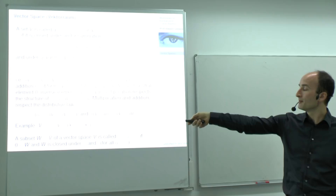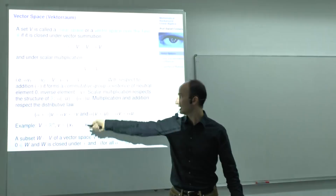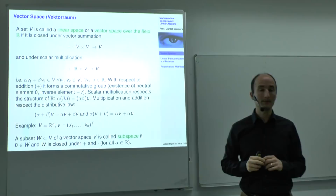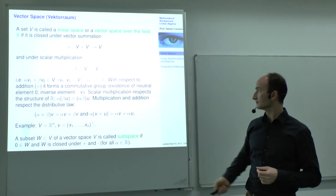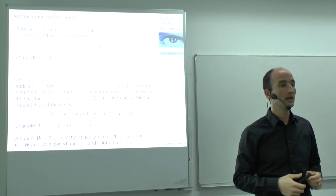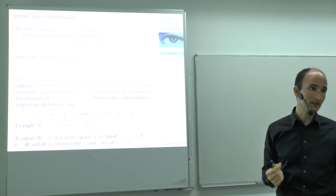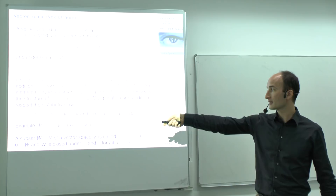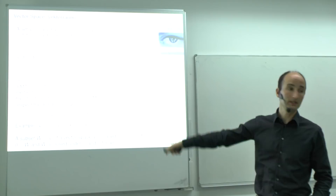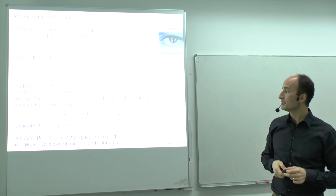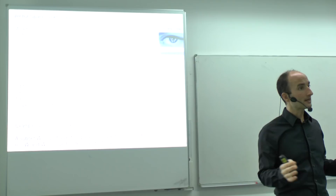Multiplication and addition respect the distributive law: whether I first do summations in the field R and then scale the vector, or first scale with alpha and beta and then sum in the vector space, the result is the same. Similarly, alpha times (v + u) should equal alpha*v + alpha*u. The vector space we will consider mostly in this class is R^n, in particular R^3 — vectors with three components.